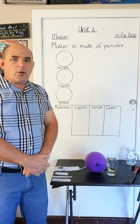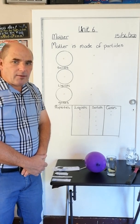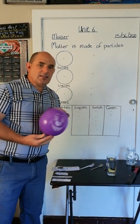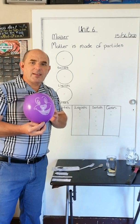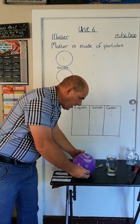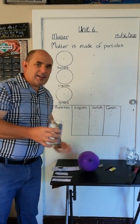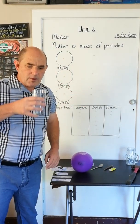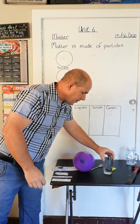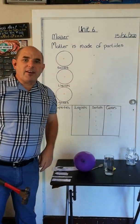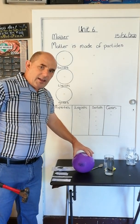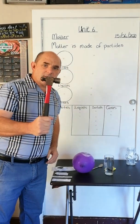So what do we know about matter? Well, we know that matter is found in three states. The first state is the gas state - matter can be a gas. Matter is also found in the liquid state. Matter can also be found in the solid state. So matter is gas, liquid, and solid.